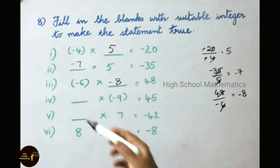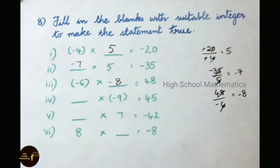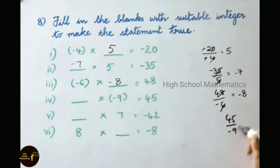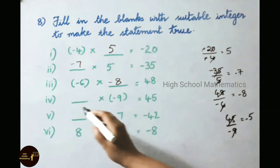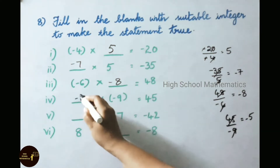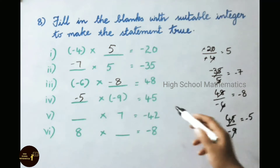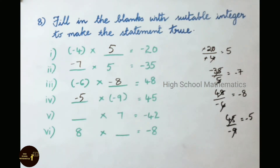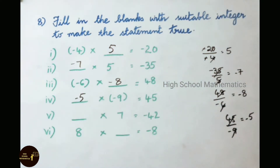Fourth one: blank into minus 9 equals 45. Let us divide 45 by minus 9. Nine times table: 45 is 5 times. Keep the minus sign, so the answer is minus 5. Therefore, minus 5 into minus 9 equals 45, since minus into minus gives plus.